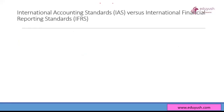IAS-8 is mentioned in one place, while somewhere else the accounting standard has IFRS written before it — IFRS 1, 2, 3, 4 and so on. So what is the difference between the two? Let's try to understand what is the International Accounting Standard and what is the International Financial Reporting Standard.